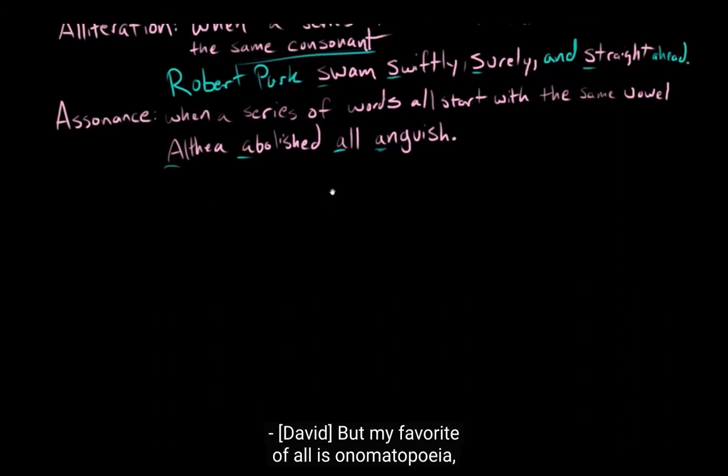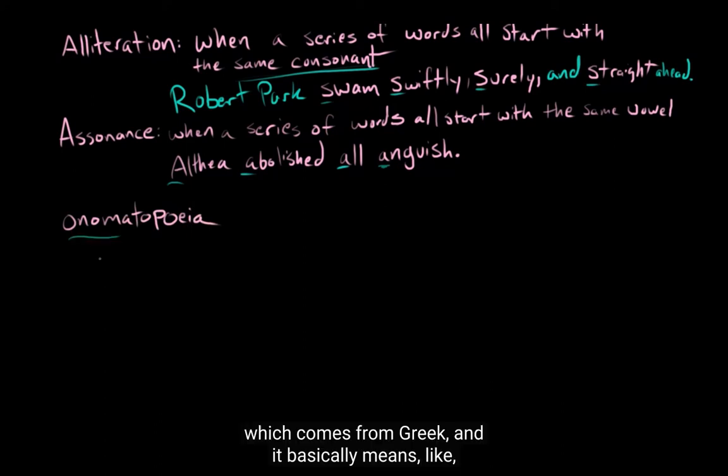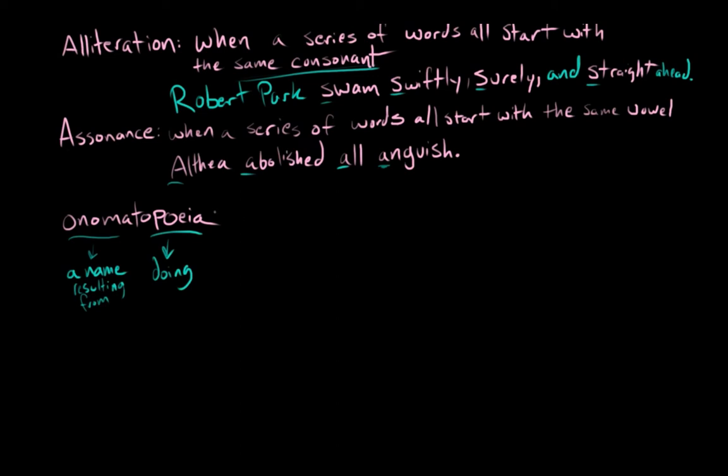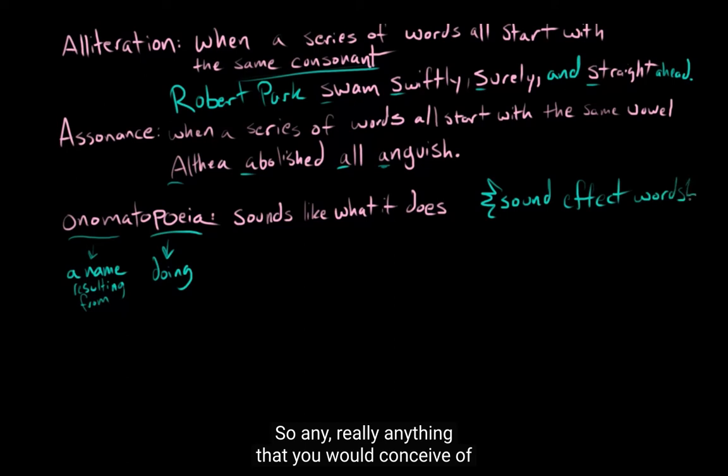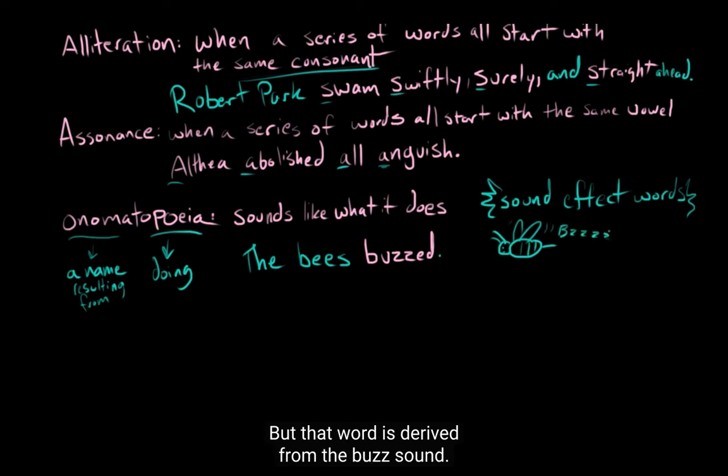But my favorite of all is onomatopoeia, which comes from Greek, and it basically means, like, onomat means a name resulting from doing. So really, this word just means sounds like what it does. So any, really anything that you would conceive of as a sound effect, like a word that comes from a sound effect. So the bee's buzzed, for example. Like, what is buzzed? Well, it's the sound that a bee makes. It's what it does. That word is derived from the bzzz sound.